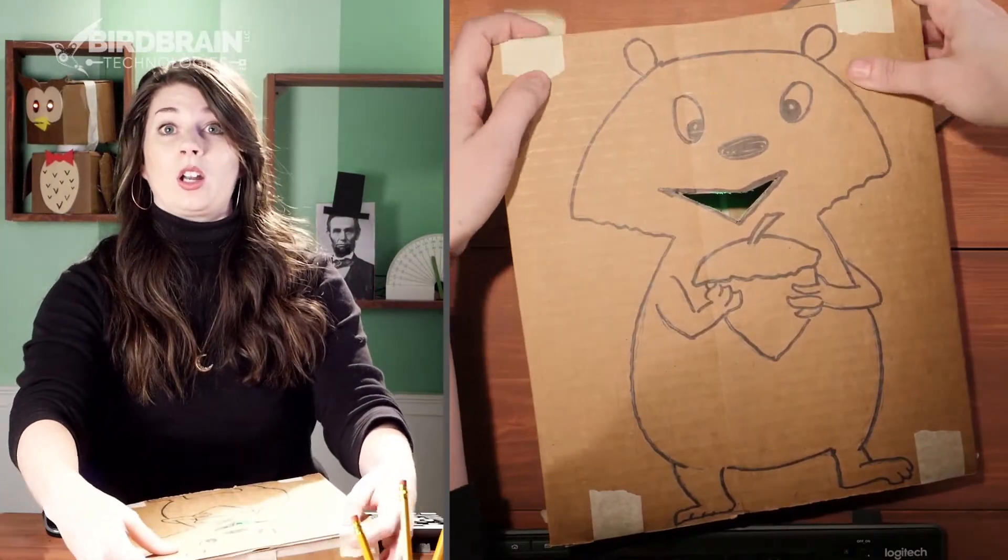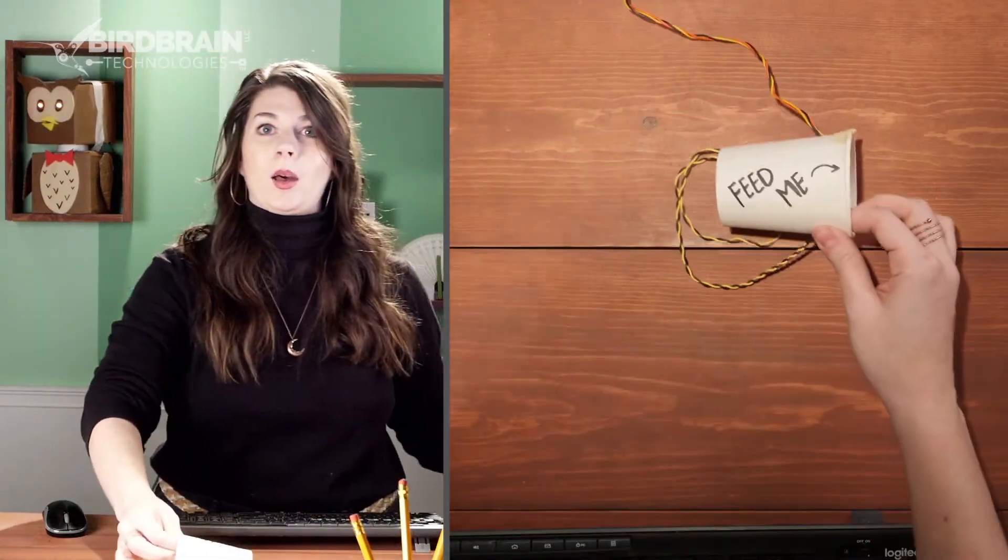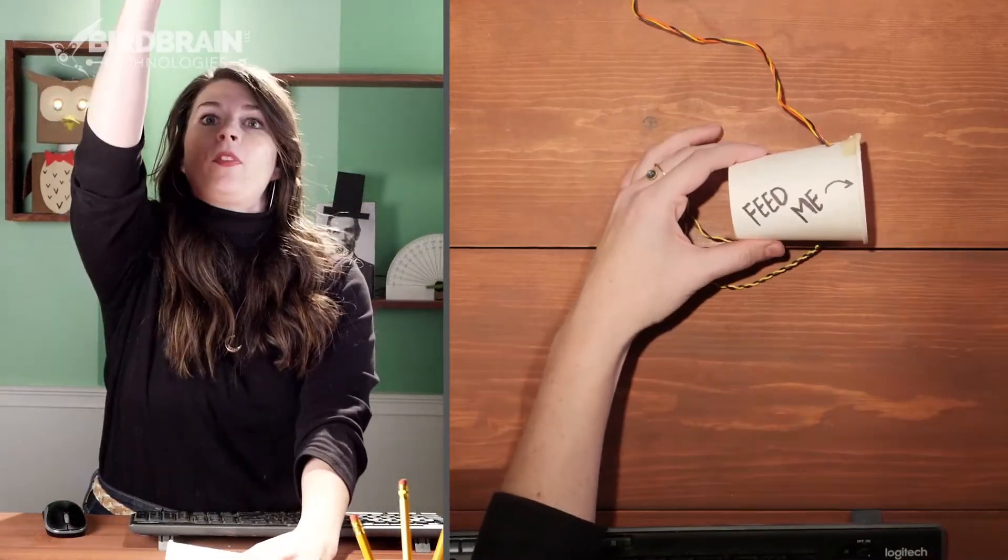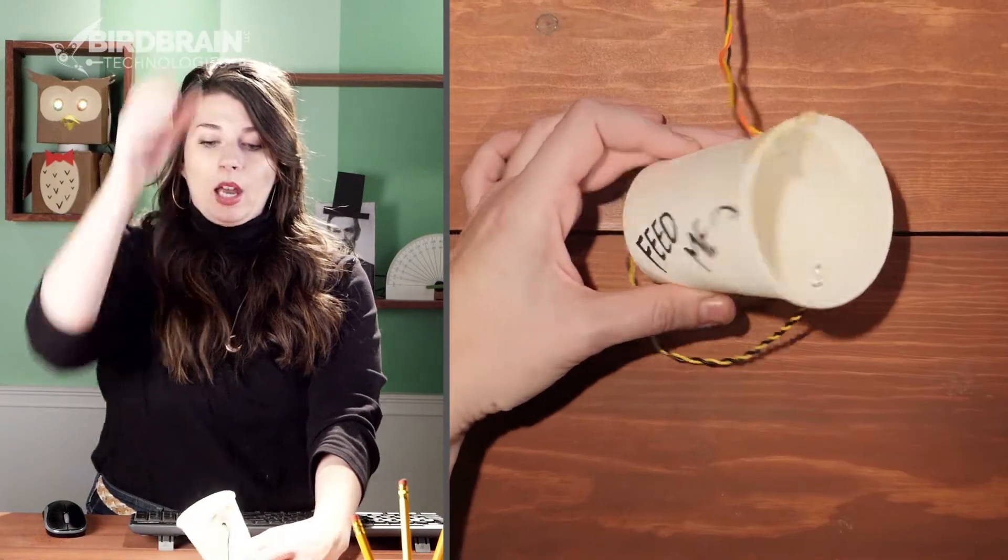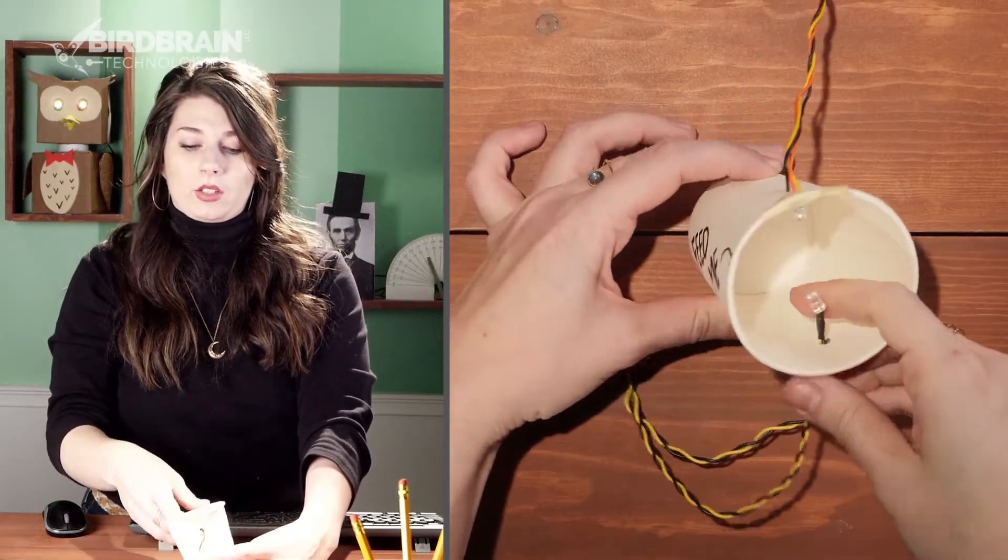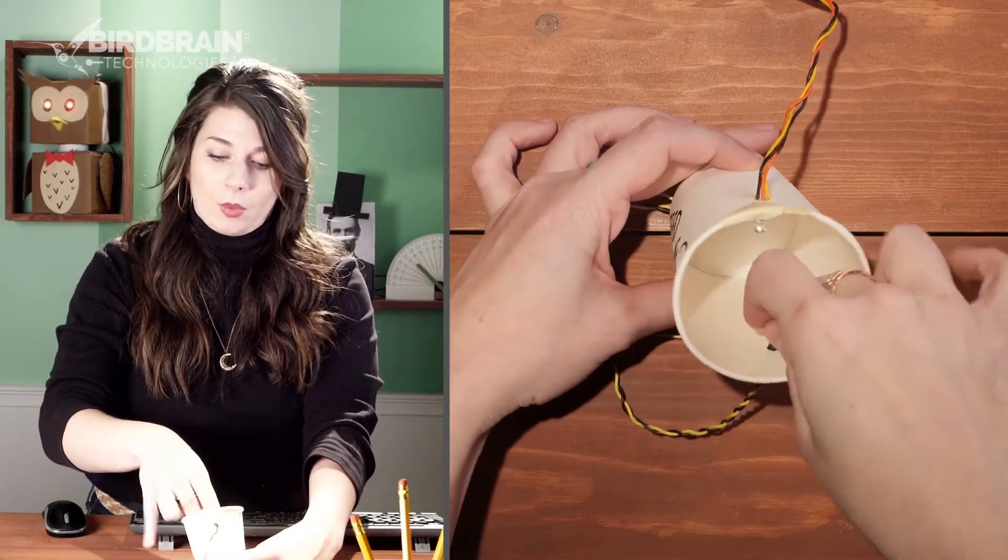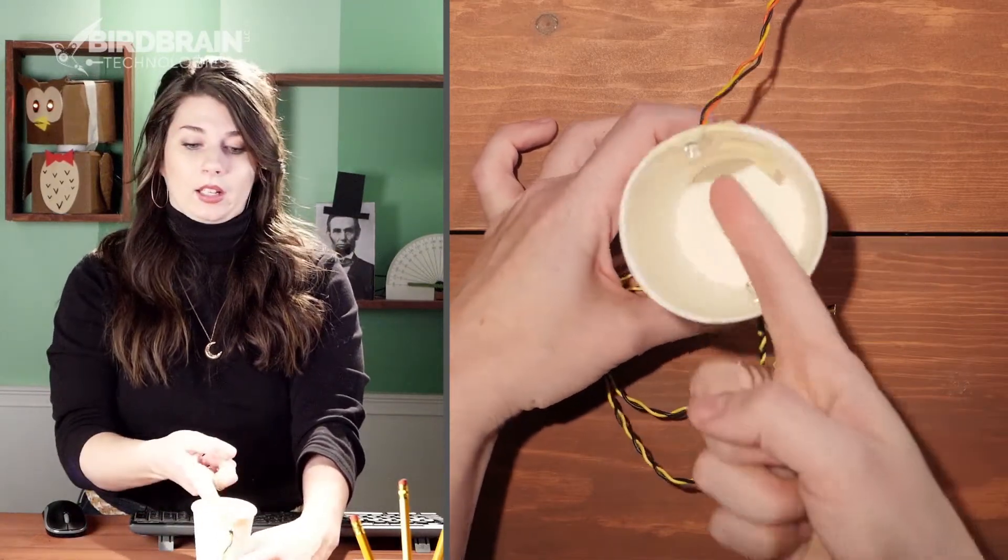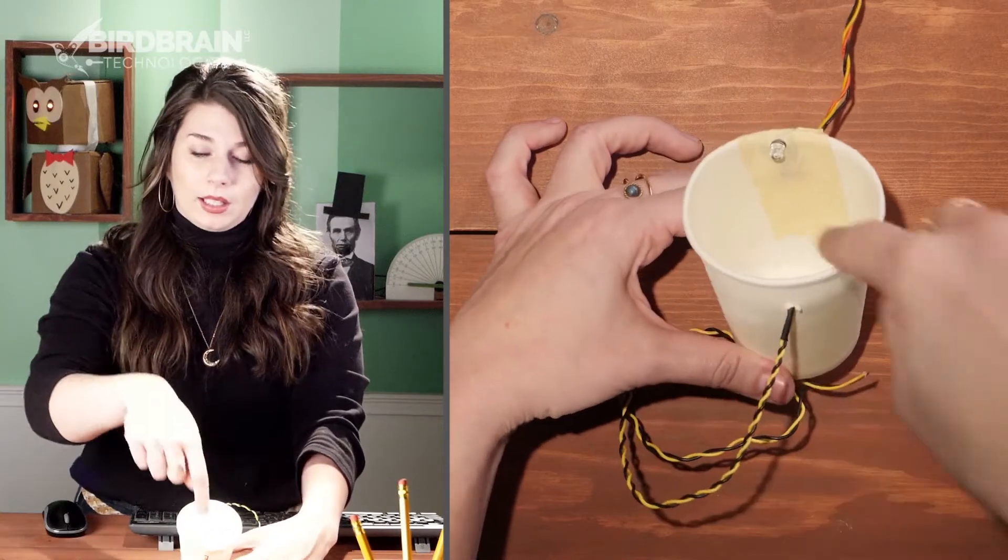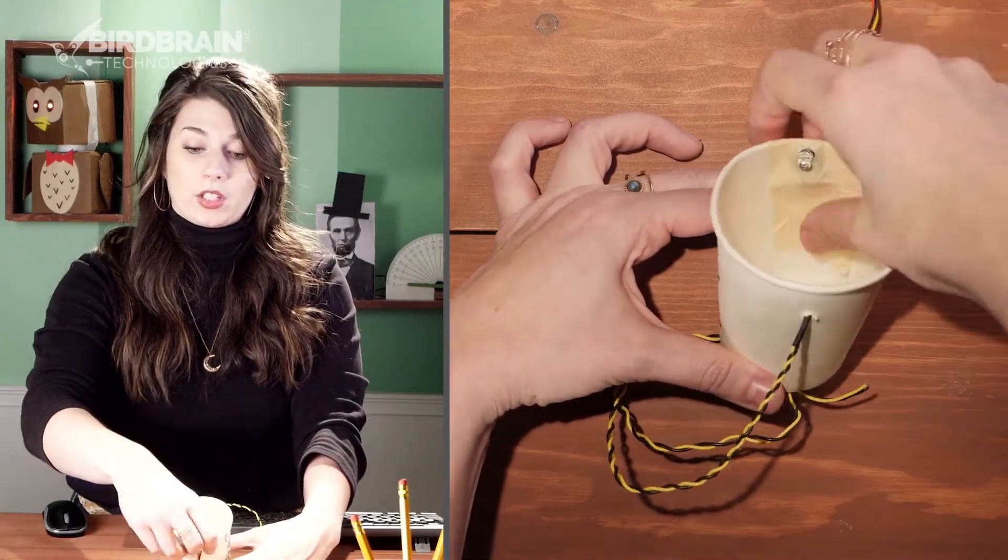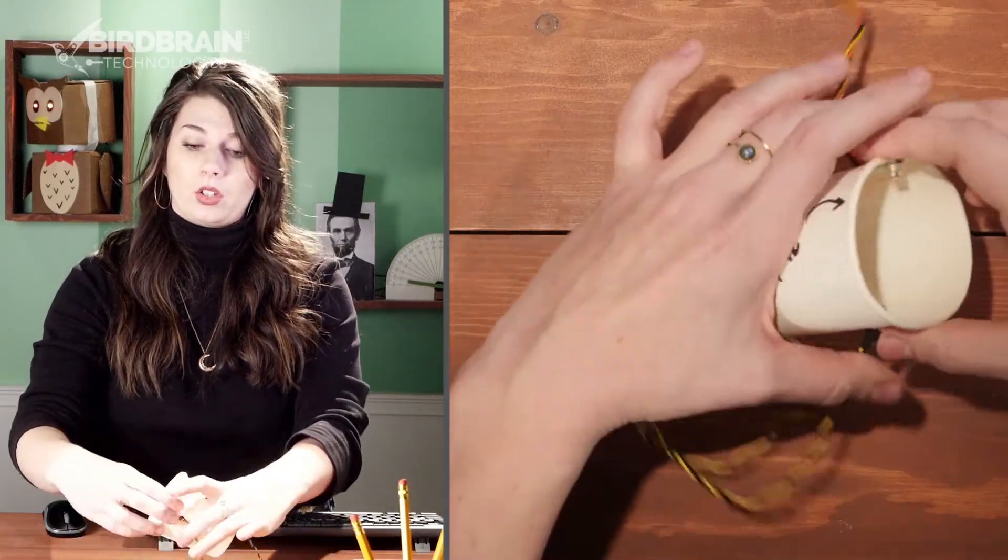So let me show you another version of this same setup that I did, using a cup. So in this cup version, I've got an LED inserted in one side. I just cut an X in my cup and inserted the LED wires first. And a light sensor on the other side that I just cut an X in my cup, inserted the light sensor wires first, and then taped it in place just like I showed you.